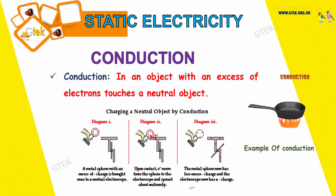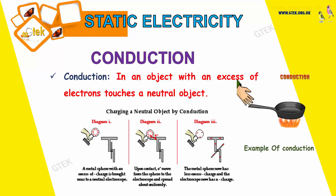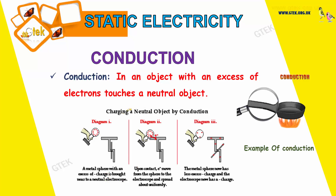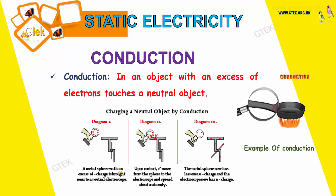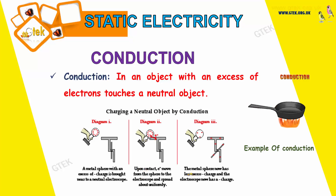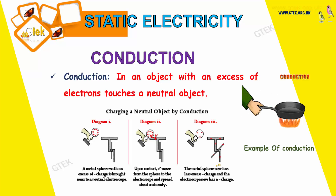The next one is conduction. When we think about conduction, an object with an excess of electrons touches a neutral object. One such example has been depicted over here — charging a neutral object by conduction. At first, a metal sphere with an excess of charge is brought near to the neutral electroscope. Then it gets into contact, and the electrons move from the sphere to the electroscope and spread about uniformly. After some time, the metal sphere now has less excess charge and the electroscope now has a charge. This is all about conduction.